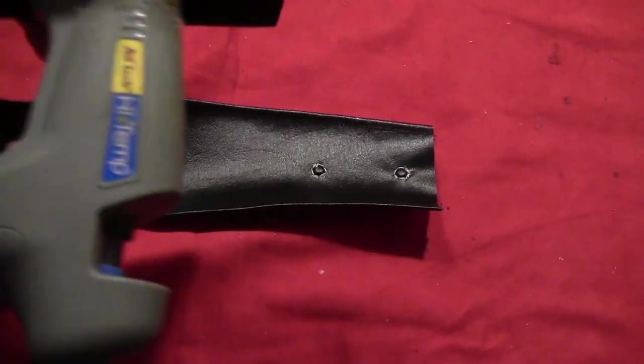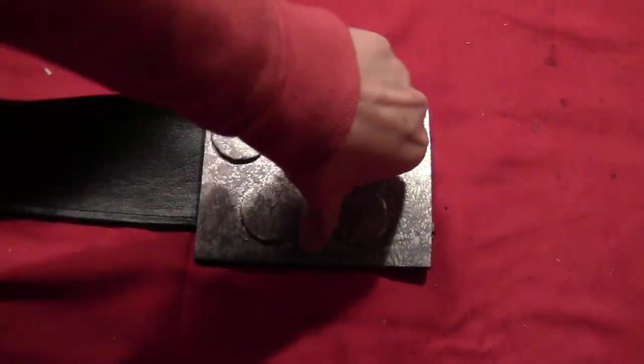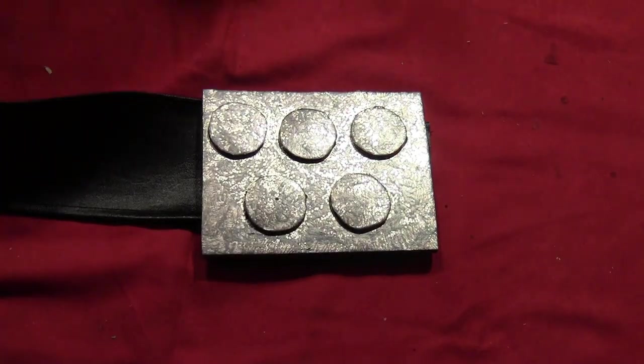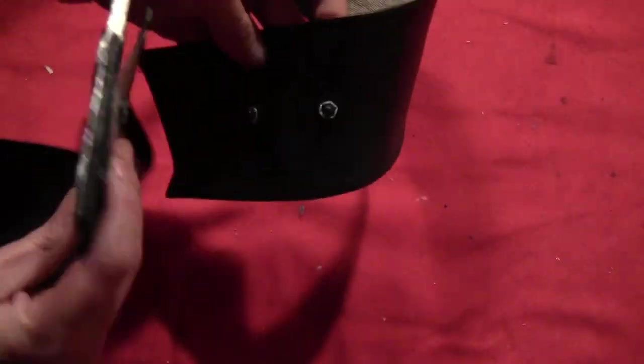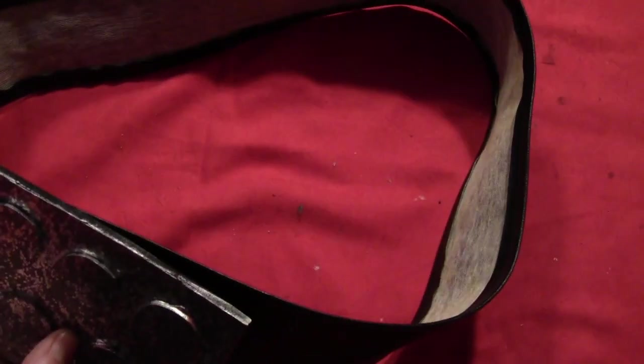Glue the belt buckle over the snaps, with the snaps on the bottom side. Then you can snap it together and wear the belt.